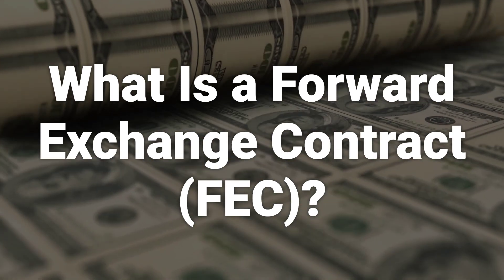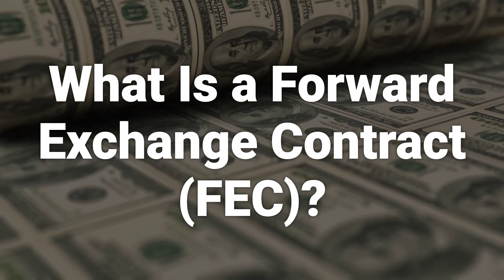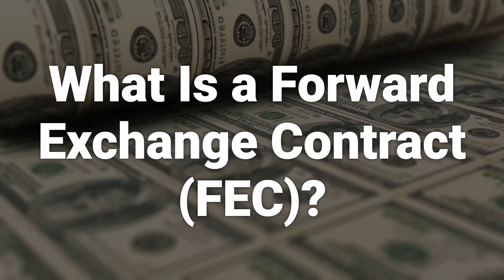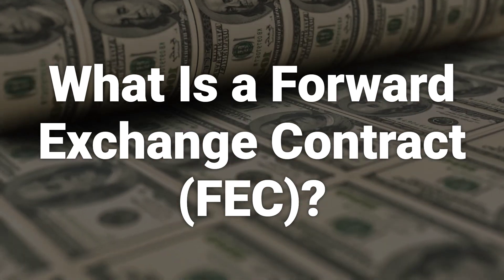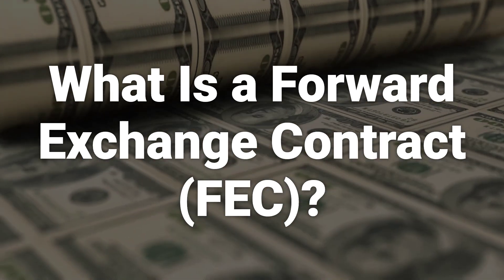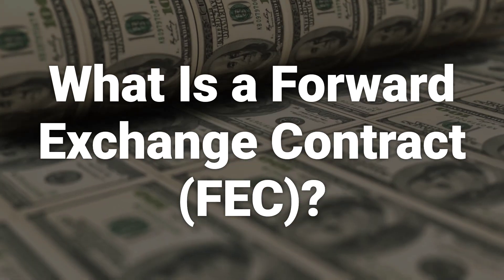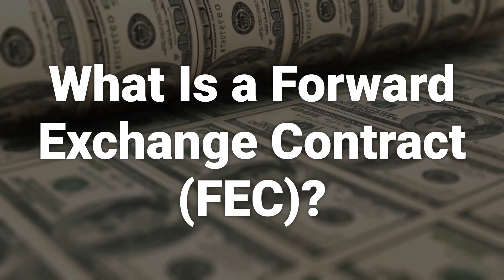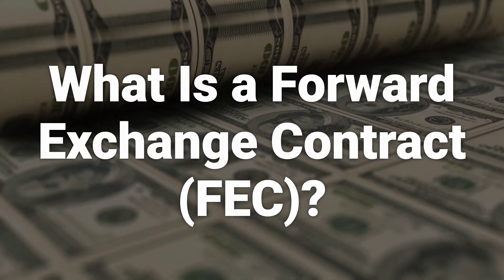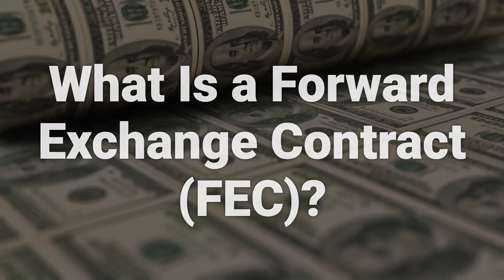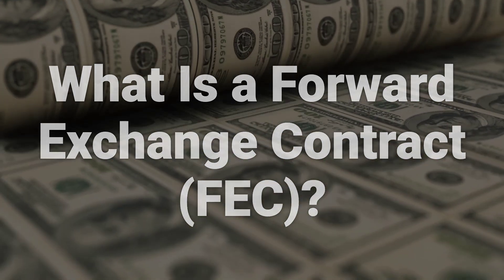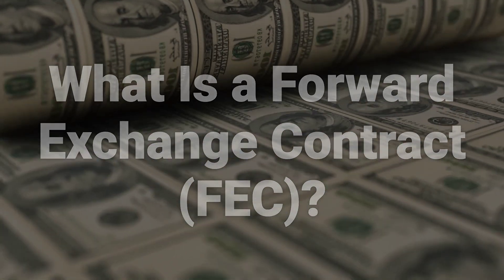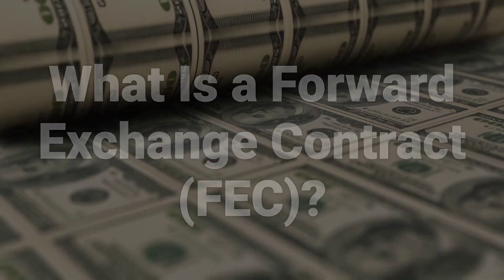Broadly speaking, forward contracts are contractual agreements between two parties to exchange a pair of currencies at a specific time in the future. These transactions typically take place on a date after the date that the spot contract settles, and are used to protect the buyer from fluctuations in currency prices.